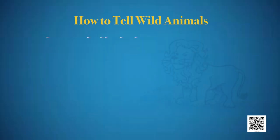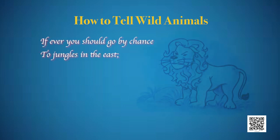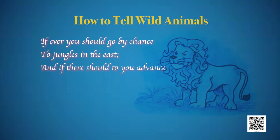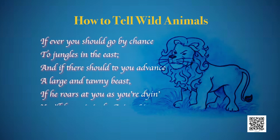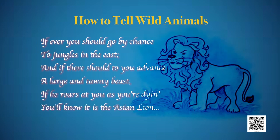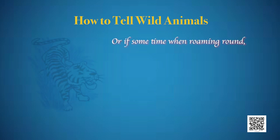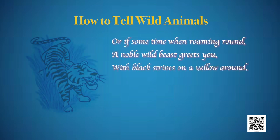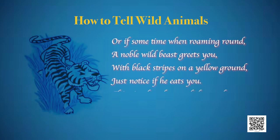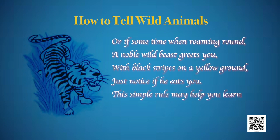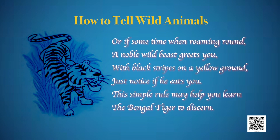Let's read the poem once again to get the deeper meaning of it. 'How to Tell Wild Animals': If ever you should go by chance to jungles in the east, and if there should to you advance a large and tawny beast, if he roars at you as you are dying, you will know it is the Asian lion. Or if sometime when roaming round, a noble wild beast greets you with black stripes on a yellow ground, just notice if he eats you — this simple rule may help you learn the Bengal tiger to discern.